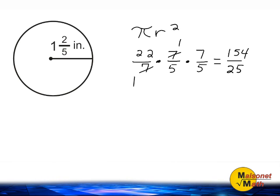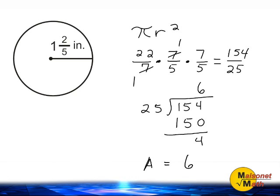So we have an area of 154 25ths, but we have to simplify this into a mixed number. And to do that, you take your numerator and put it under the division sign, and always divide it by your denominator. So we are going to figure out what is 154 divided by 25. 25 can be divided into 154 six times. 6 times 25 is 150, giving us a difference of 4. So we would say the area of the circle is equal to 6 and 4 25ths square inches.